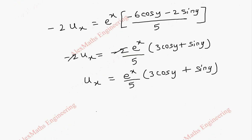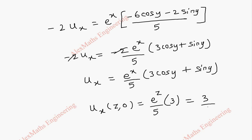We need ux(z, 0). This is e^z divided by 5, and substituting: 3 times cos 0 is 3 times 1, and sin 0 is 0. So totally this is 3 divided by 5 times e^z.